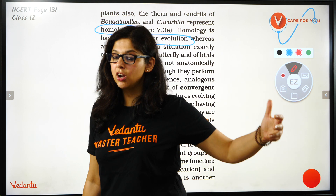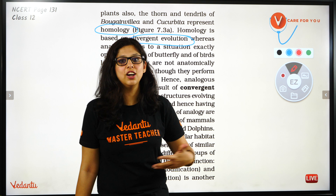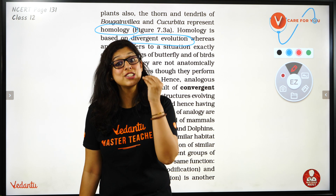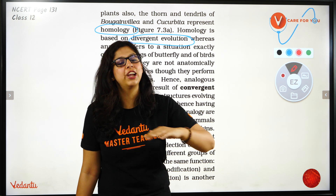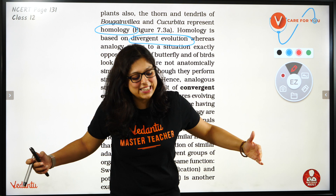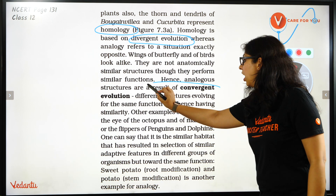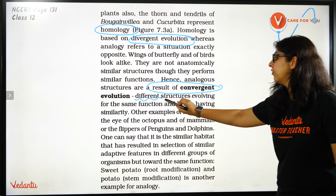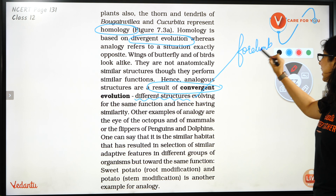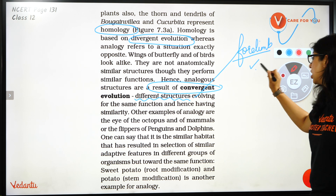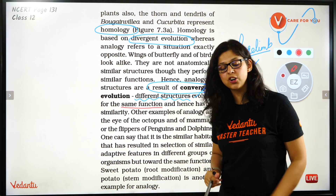Homologous organs always represent Divergent Evolution. Now, a bird's wing is a modification of the forelimb — it is made up of humerus, radius, carpal, metacarpal, and phalanges. However, insects have appendages that are a completely different structure. Different structures performing the same function — that is called Convergent Evolution.